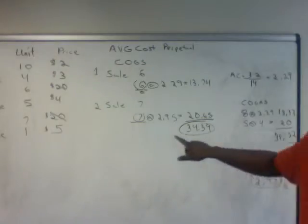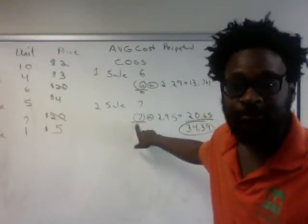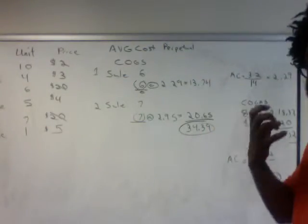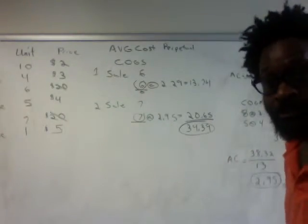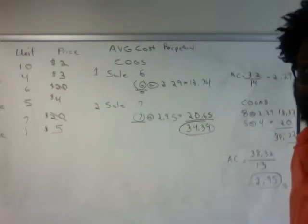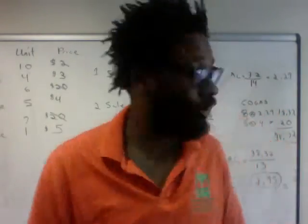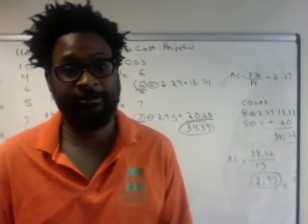But we just finished selling seven units. So how many units do we have left with an average cost of $2.95? Seven from 13 gives us six. So we have six units left with an average cost of $2.95.